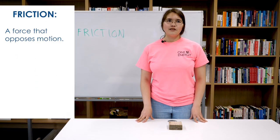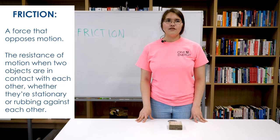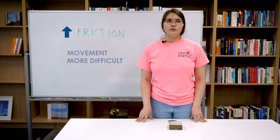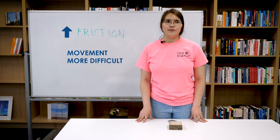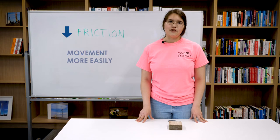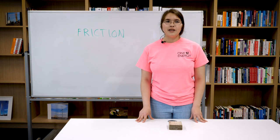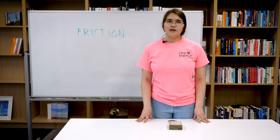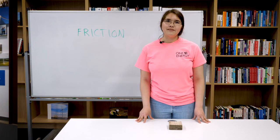Friction is described as a force that opposes motion. It's the resistance of motion when two objects are in contact with each other, whether they're stationary or rubbing against each other. A higher amount of friction makes it more difficult for an object to move, whereas a lower amount of friction allows movement more easily. Friction is the reason why this block remains unmoving on the table, why brakes on a car cause it to stop, and why I've been able to stand upright this whole time.